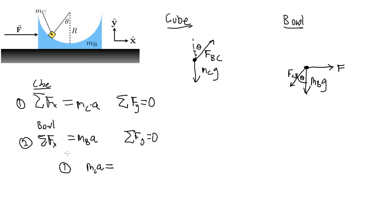So for equation 1, what I'm going to do is I'm going to say that mc times a, cube mass times the acceleration, is equal to the sum of the forces in the x direction. Well here, that's this component, F_bc times the sine of the angle, that's the x direction, and there's no other forces.